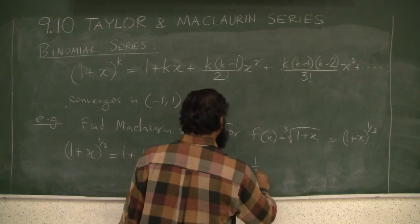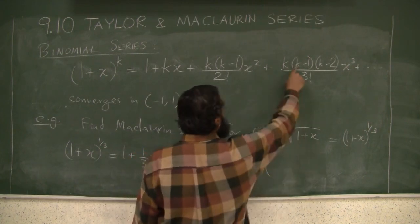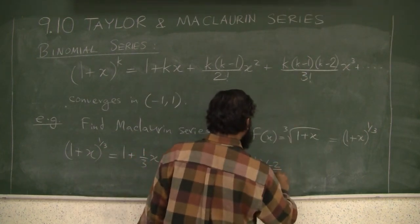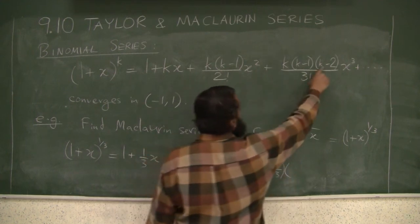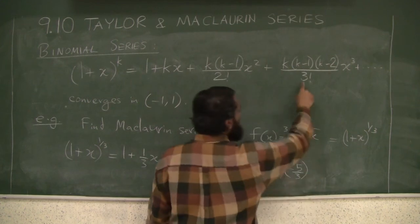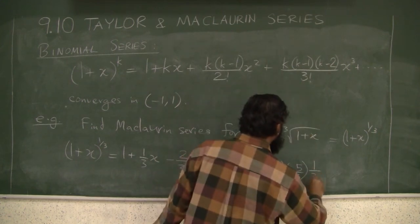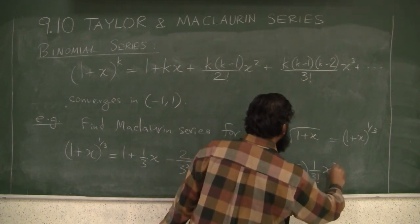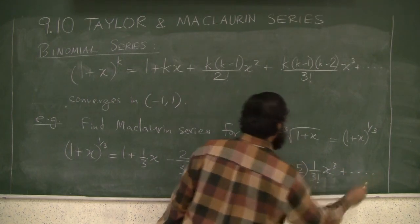Then plus you have 1/3 times (1/3 minus 1), which is negative 2/3, times (1/3 minus 2), which is negative 5/3. Then you still have the 1 over 3 factorial times x cubed, and so on.